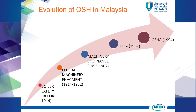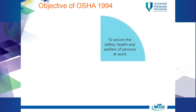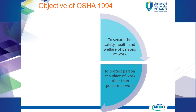Occupational Safety and Health Act (OSHA) was enacted in 1994 to strengthen the legal framework of OSH in Malaysia, in order to achieve the following objectives: number one, to secure safety, health and welfare of persons at work against risks of the activities at work; number two, to protect persons at a place of work other than persons at work against risks of the activities at work.